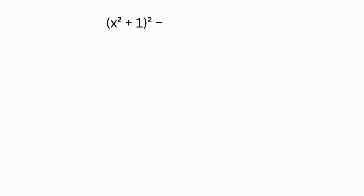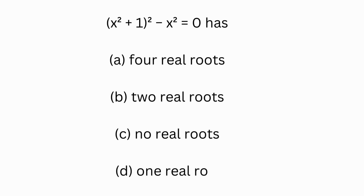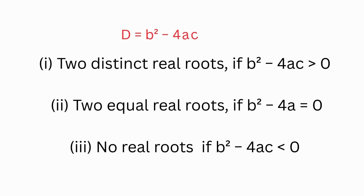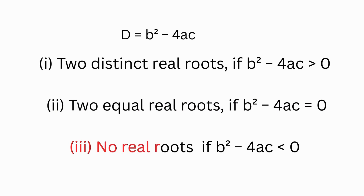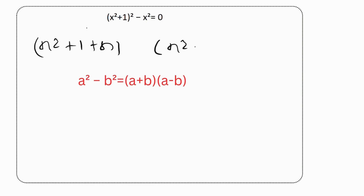The question: (x² + 1)² - x² = 0 has four real roots, two real roots, no real roots, or one real root? To find the number of zeros, recall: two distinct real roots if b² - 4ac > 0, two equal real roots if b² - 4ac = 0, and no real roots if b² - 4ac < 0. We factorize using the identity a² - b² = (a+b)(a-b), giving (x² + x + 1)(x² - x + 1) = 0.